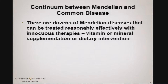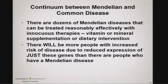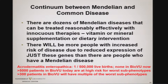There is this continuum. There are dozens of Mendelian diseases that can be treated reasonably effectively with innocuous therapies — vitamin or mineral supplementation, dietary intervention. For some of these it's a five-, six-, or eight-fold increased risk of bad things like kidney failure. We don't have patients with this specific diagnosis in BioVU because it's one in 500,000, but there are 5,000 patients in BioVU today at high risk for the worst subtypes of this condition.